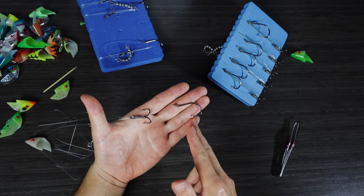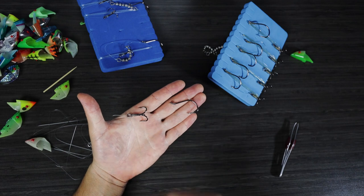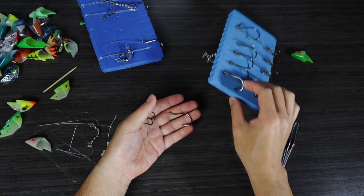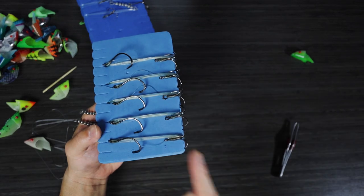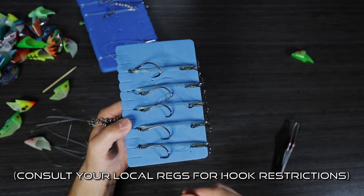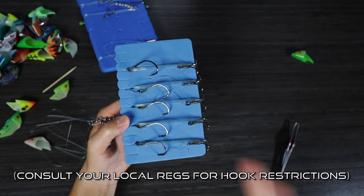So with tandem hook combinations, of course, you can go with, you know, go single, single front to back, treble, single like this one here, go single, treble, like these ones here. Or, you know, if the going gets tough, then you can go treble, treble.